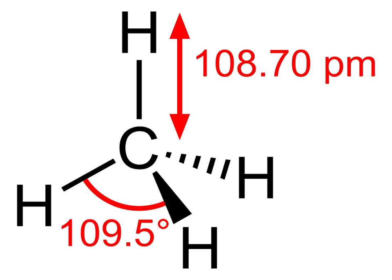Methane is a chemical compound with the chemical formula CH4, one atom of carbon and four atoms of hydrogen. It is a group 14 hydride and the simplest alkane, and is the main constituent of natural gas.